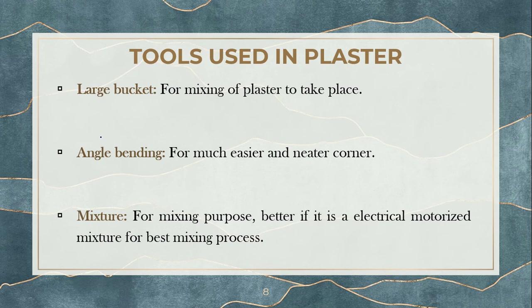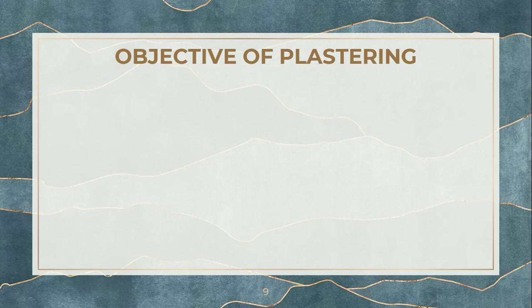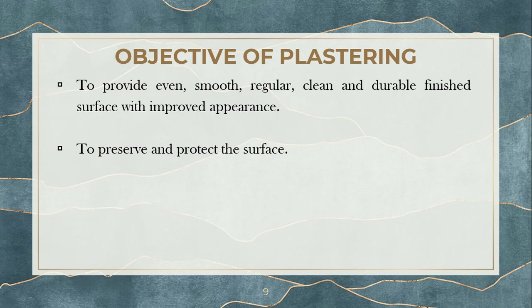Now, what is the objective of plastering — why should we plaster? The first purpose is to provide an even, smooth, regular, clean, and neat surface. Imagine a wall which is not plastered, constructed out of brick, compared to the same wall which is plastered — which looks neat, smooth, and can be cleaned very easily? Obviously the plastered one. So you get improved appearance, and also to preserve and protect the surface. The plastered wall is clearly less vulnerable to attacks.